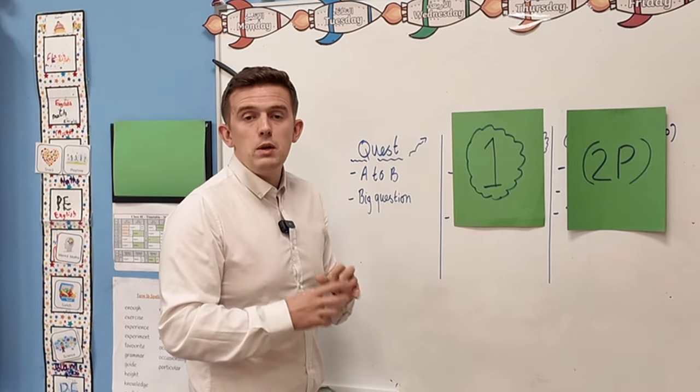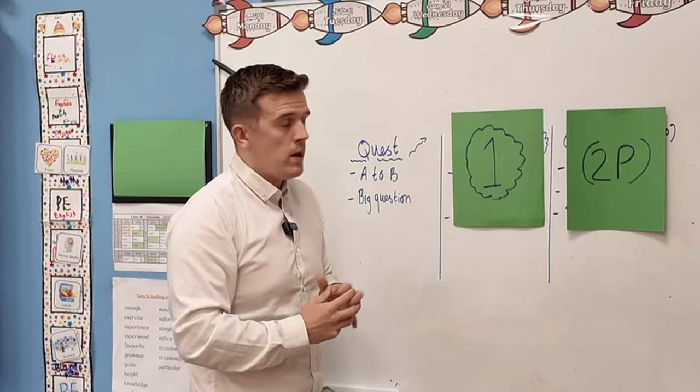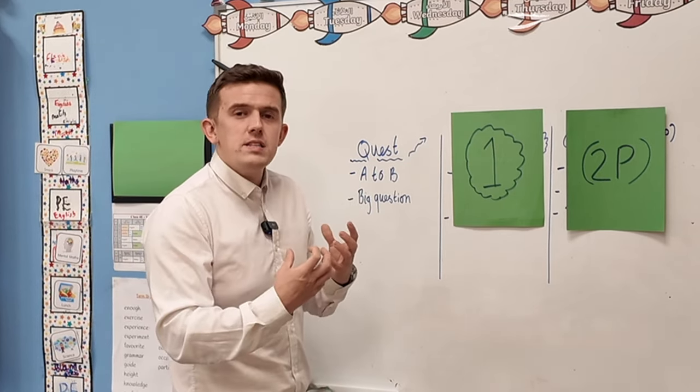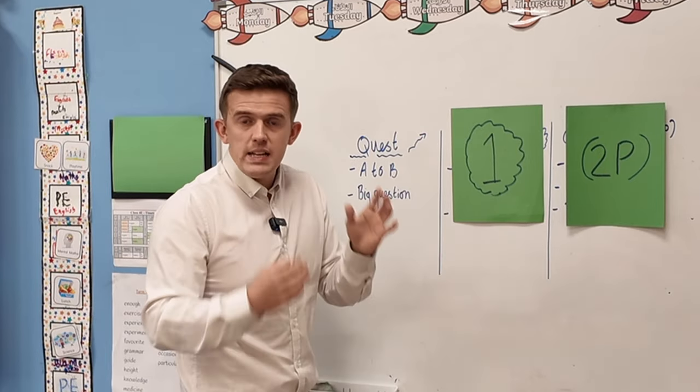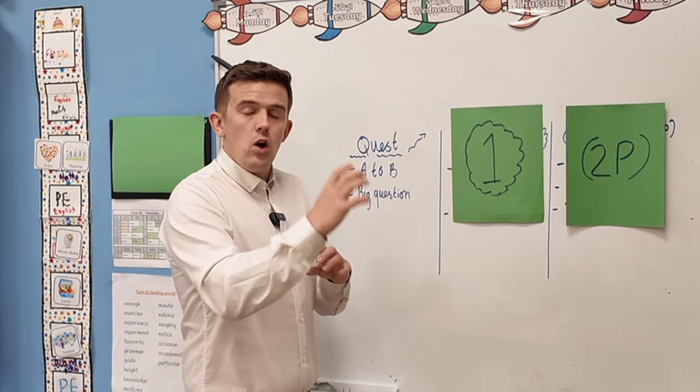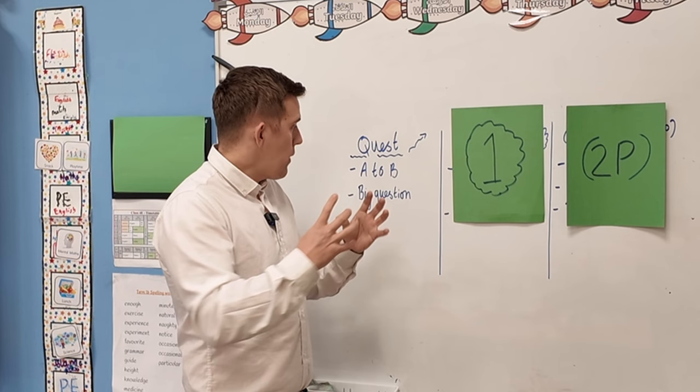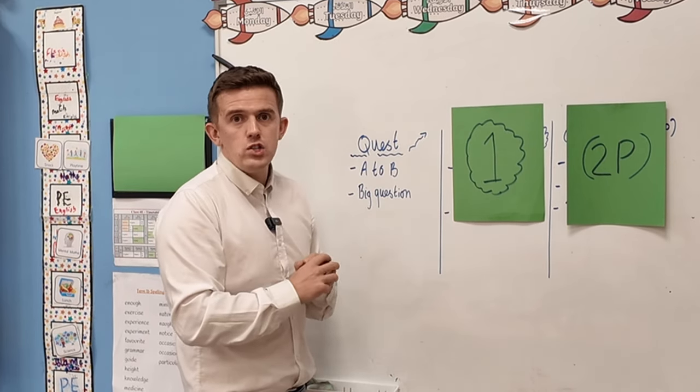A simple big question can be a really good way to unlock and go through that quest with the children. You start with a big question and then you go through an inquiry-based approach of breaking down that big question into smaller questions that the children then need to unlock. As they're unlocking those different questions, you can start to think about how we are breaking that question down to unlock that bigger question.